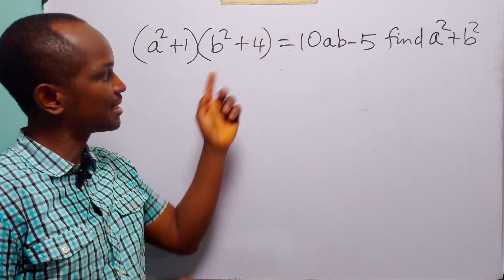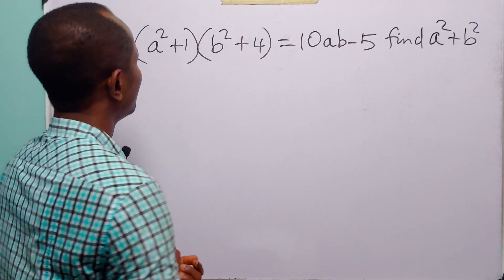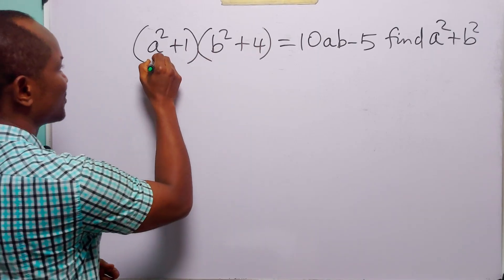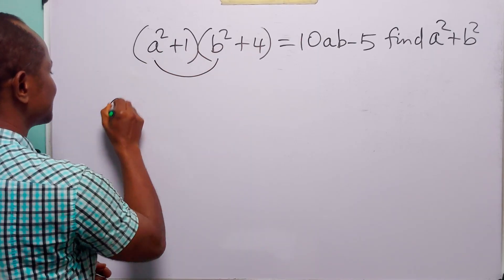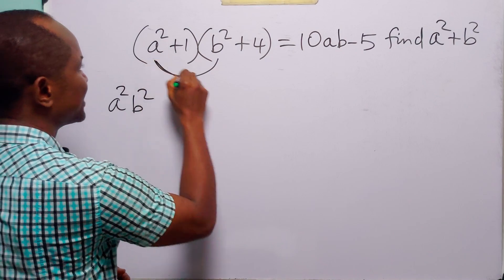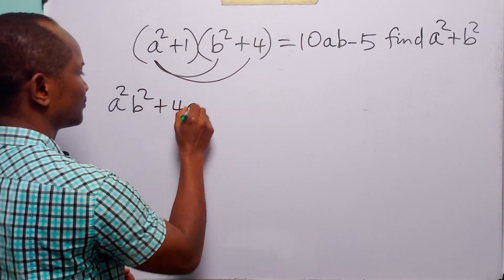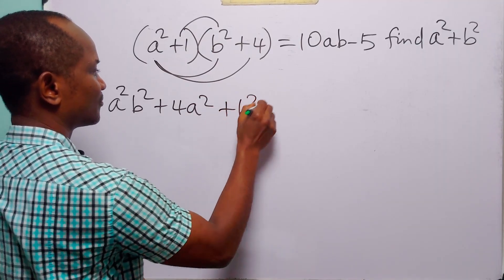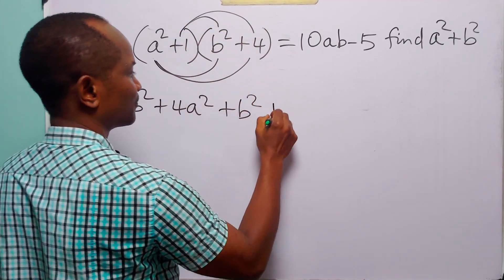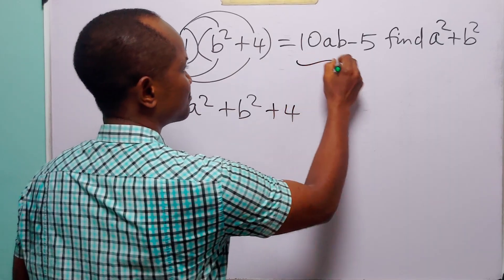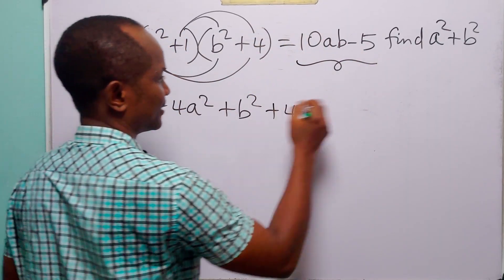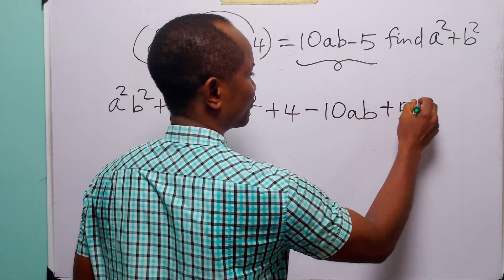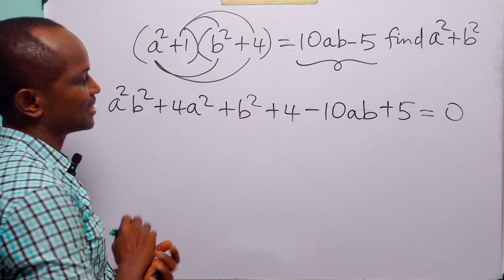To solve this problem, let us start by rearranging the given equation. We will expand the two brackets: we have a squared times b squared, a squared times 4, 1 times b squared, and lastly 1 times 4. Now let us move these two terms over to the left-hand side: we have minus 10ab and plus 5, leaving 0 on the right-hand side.